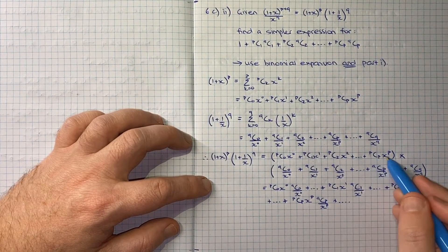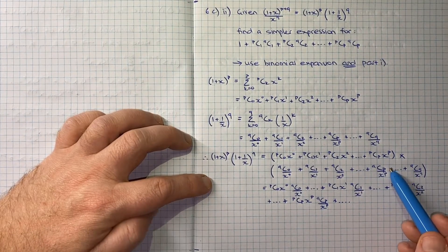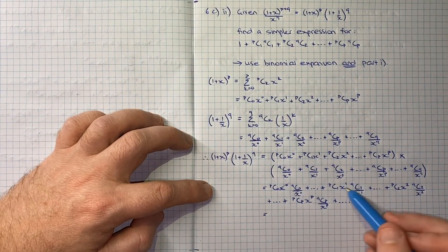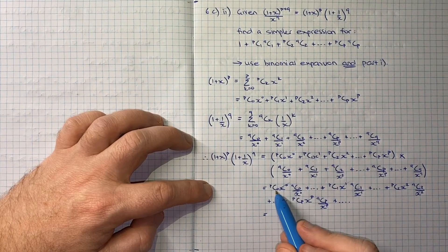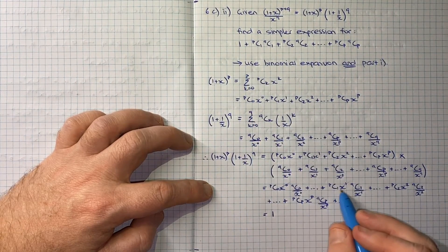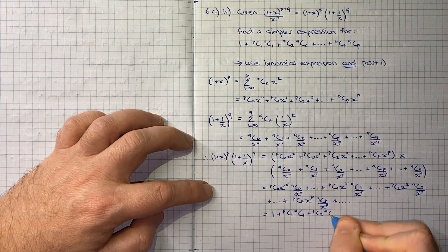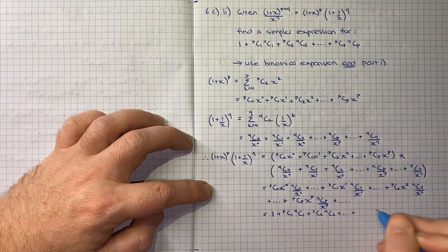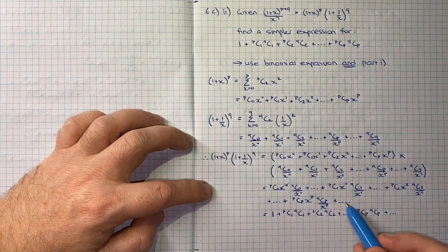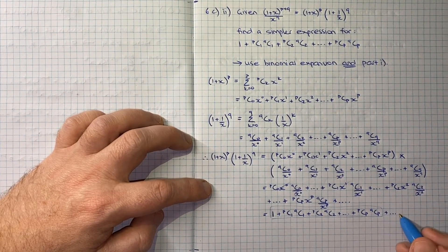Collecting all the x-independent terms, we get: pC0·qC0 + pC1·qC1 + pC2·qC2 + ... + pCp·qCp. Since pC0·qC0 = 1×1 = 1, this simplifies to 1 + pC1·qC1 + pC2·qC2 + ... + pCp·qCp, plus all the other terms involving powers of x. The expression we need is just those x-independent terms collected together.